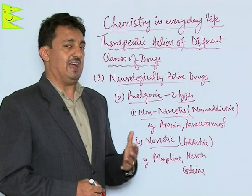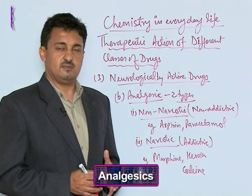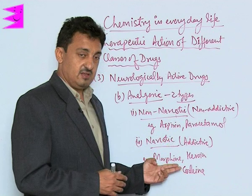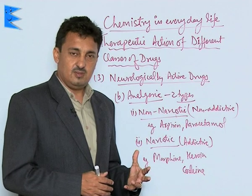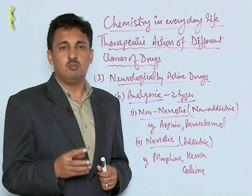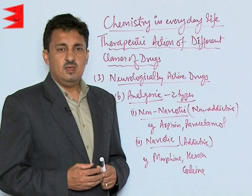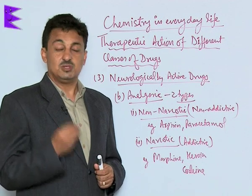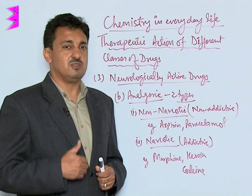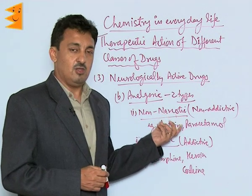The second category of neurologically active drugs are analgesics. Analgesics are those drugs which give us relief from pain. These drugs are of two types: non-narcotic and narcotic. Non-narcotic are non-addictive in nature; we can take them anytime and they will not become habitual. Aspirin and paracetamol are the most commonly used analgesics. One more important use of aspirin is that it is also used as a blood thinner.